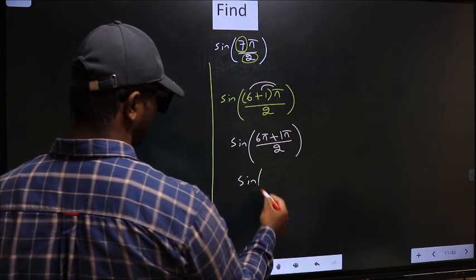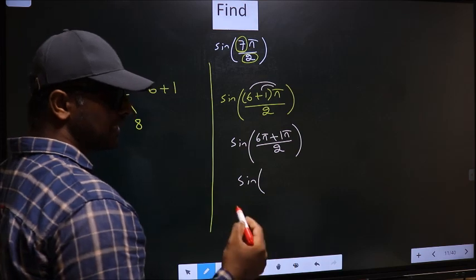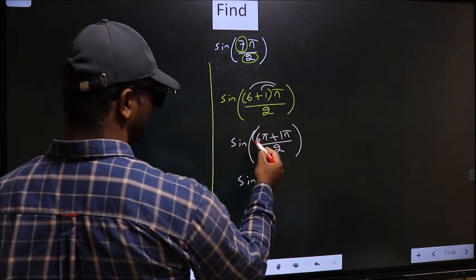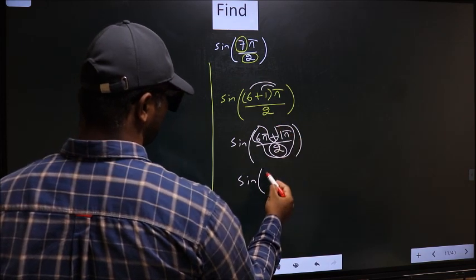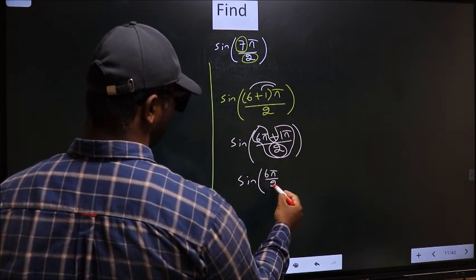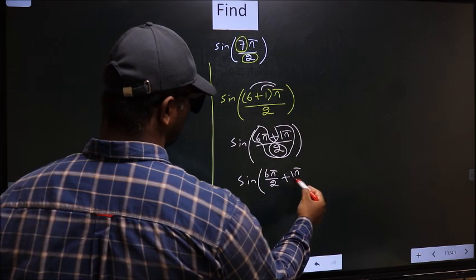Now sine. You should split the denominator in this way. That is 6π/2 + 1π/2.